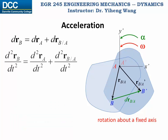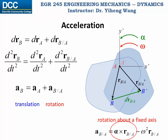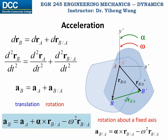Similarly, if we take the second time derivative of this equation, we get the equation that relates the linear acceleration of two arbitrary points in the same rigid body undergoing general plane motion. The linear acceleration of particle B can be determined through two contributions: aA, the linear acceleration of particle A, represents the contribution from translation, and the relative acceleration of B with respect to A represents the contribution from rotation. For rotation about a fixed axis, the linear acceleration has two components: tangential and normal acceleration.